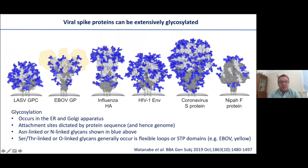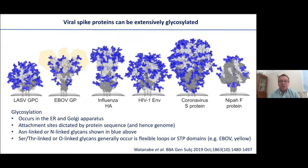Viruses are extensively glycosylated. This slide shows a series of viruses with similar architectures and similar attachment and fusion mechanisms. On the left there's Lassa fever, then the hemorrhagic fevers, Ebola, flu, HIV, and coronaviruses. I'll be drawing a lot of lessons from these other viruses, in particular HIV, where we've been principally funded to work.